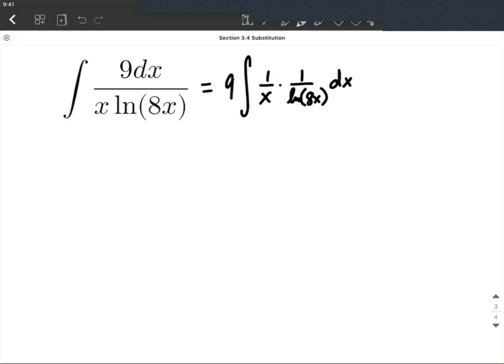From here, we want to pick out what we're going to utilize for our u. Typically you want this to be an inner function. But in this case, we either want to choose it to be 1 over x or the natural log of 8x. I believe in this case we want to use natural log of 8x.